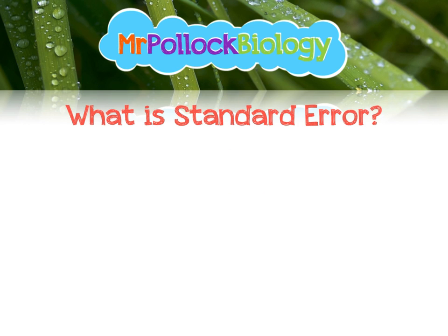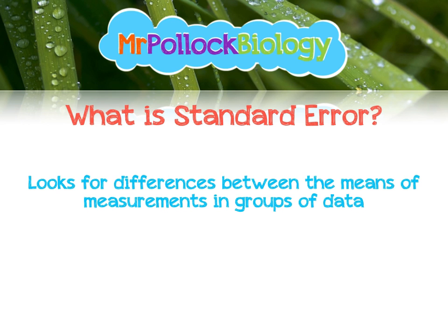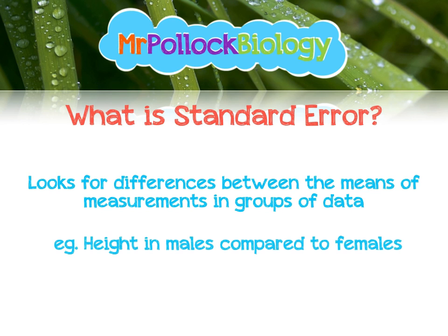So what is standard error? Standard error looks for differences between the means of different measurements in different groups of data. It's comparing the means from two or more different groups of measurements and looking to see if there is a significant difference between those. For example, you could compare the height of males and the height of females, looking to see if one sex was significantly taller or shorter than the other.